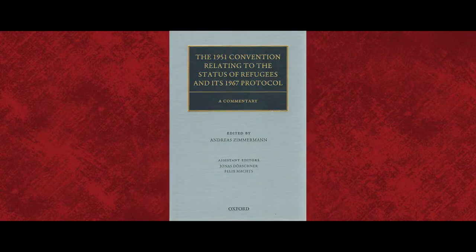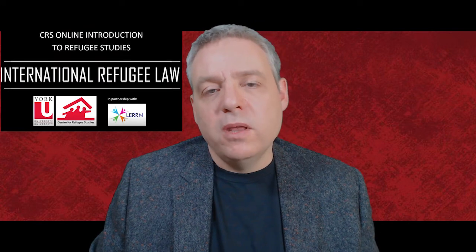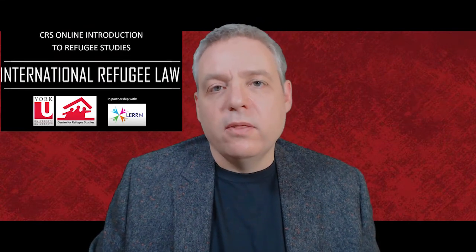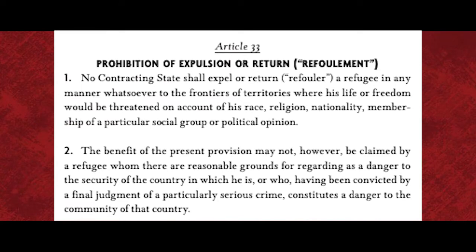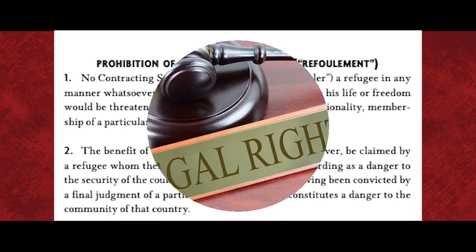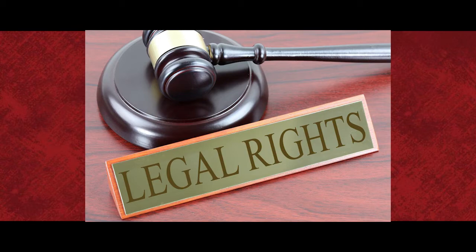There are two key international instruments that outline international refugee law and that provide a foundation for global refugee policy. These are the 1951 Refugee Convention relating to the status of refugees, often called the Refugee Convention, and the 1967 Protocol relating to the status of refugees. These instruments create a common refugee definition and outline the obligations that states have towards refugees. In particular, refugees are entitled to protection from refoulement or forcible return to a place where they face persecution. They are also afforded a series of economic, social, and political rights such that they are treated much like citizens of the country where they live.